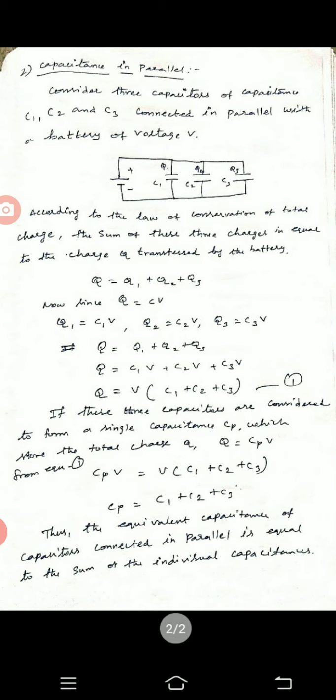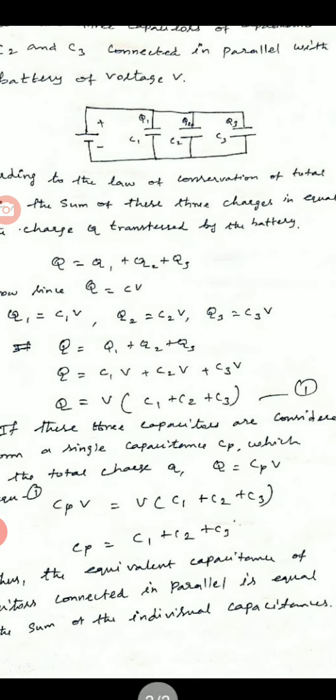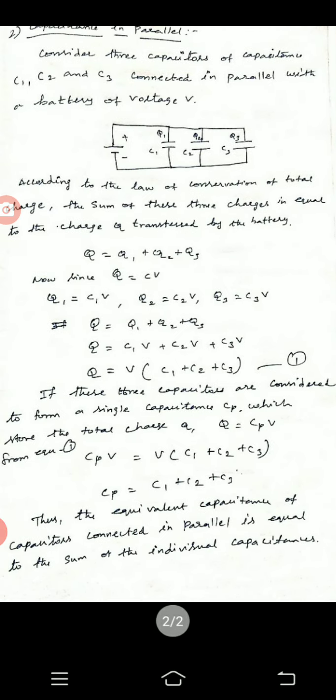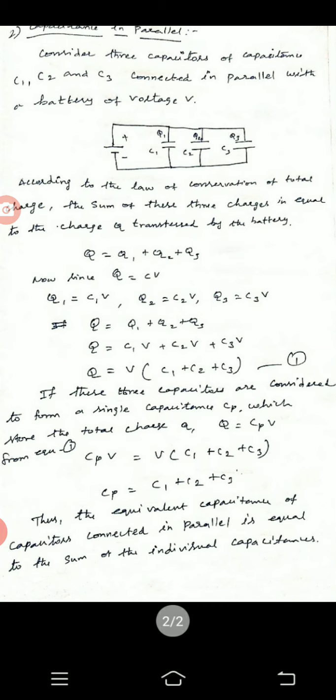If these three capacitors are considered to form a single equivalent capacitor, then Q equals V times (C1 plus C2 plus C3). That is the final conclusion.